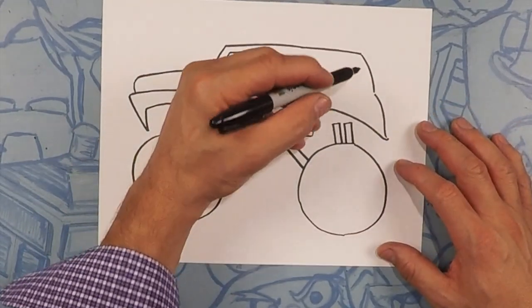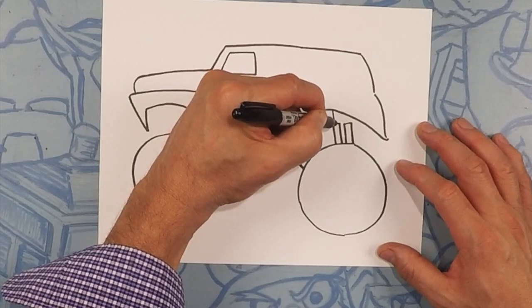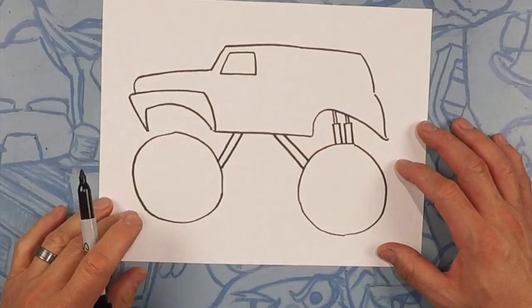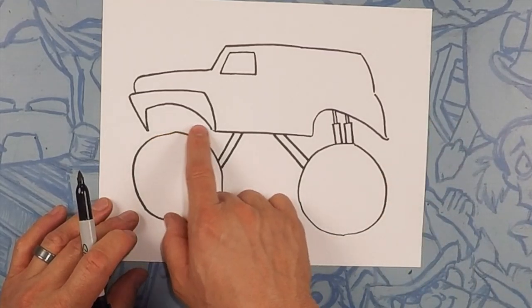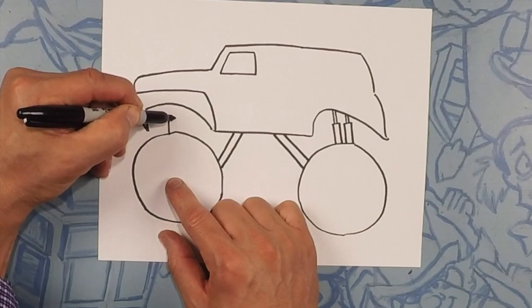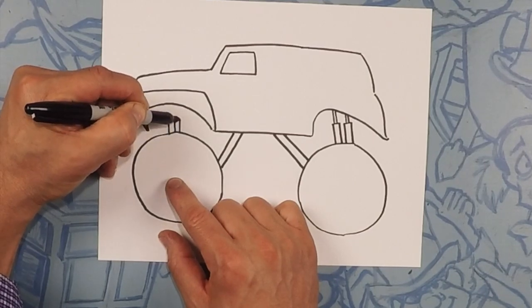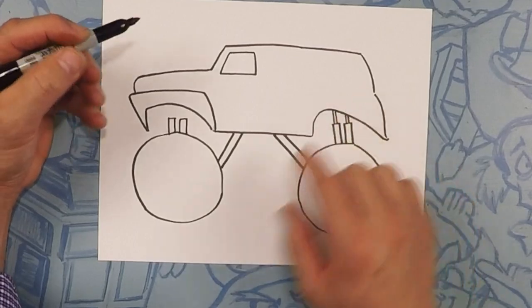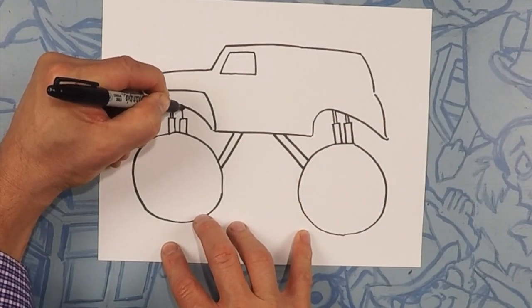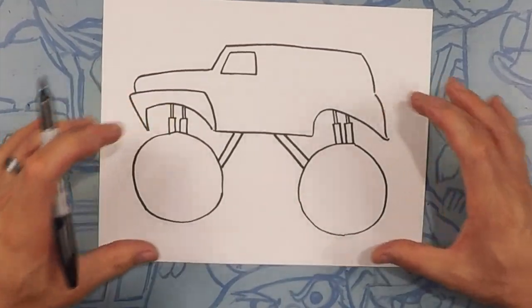So let's do two thinner lines going up from there to connect to the body. One, two. One, two. Perfect. So same thing here. We're gonna do two long rectangles first. One, two. And then go ahead and do two thin lines going up into the body. It's got a nice little action there.